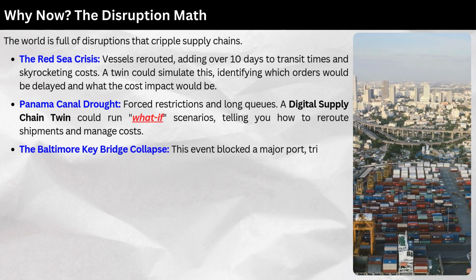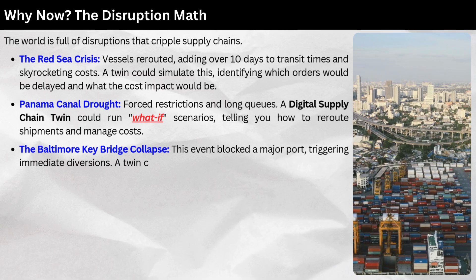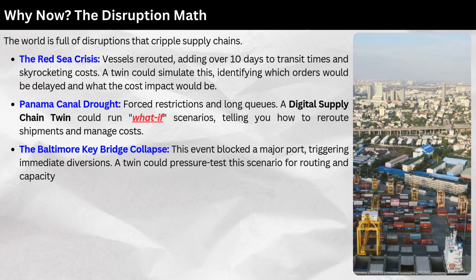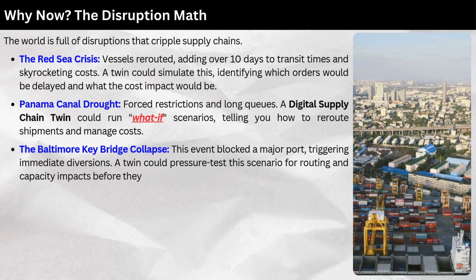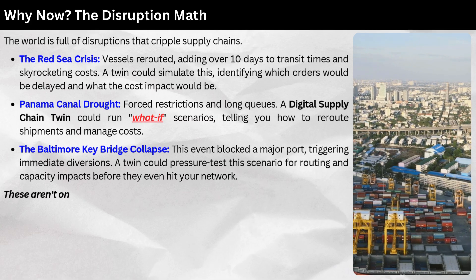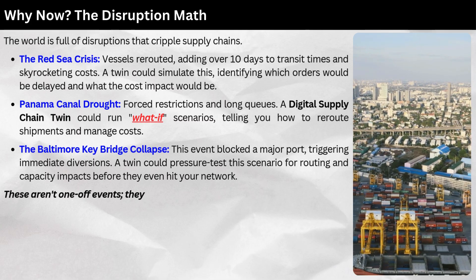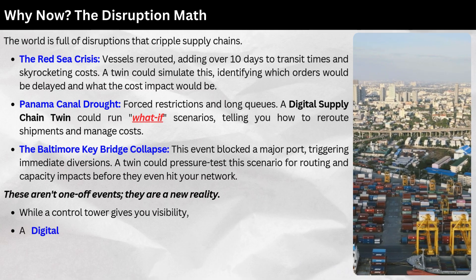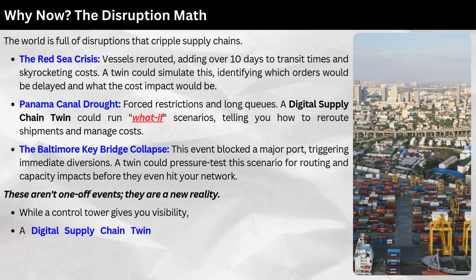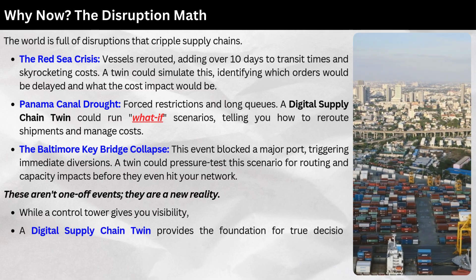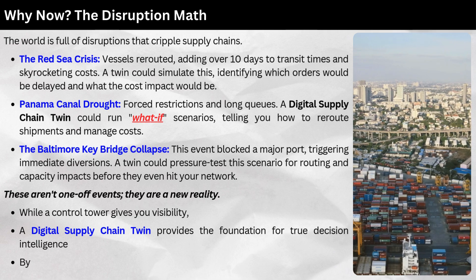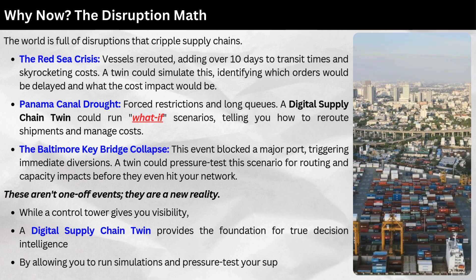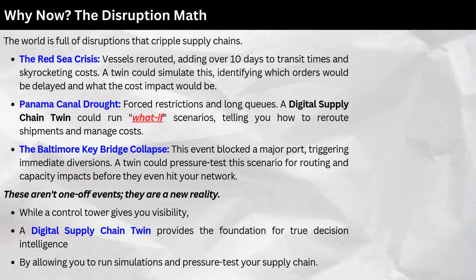The Baltimore Key Bridge collapse blocked a major port, triggering immediate diversions. A twin could pressure test this scenario for routing and capacity impacts before they even hit your network. These aren't one-off events — they are a new reality. While a control tower gives you visibility, a digital supply chain twin provides a foundation for true decision intelligence by allowing you to run simulations and pressure test your supply chain.